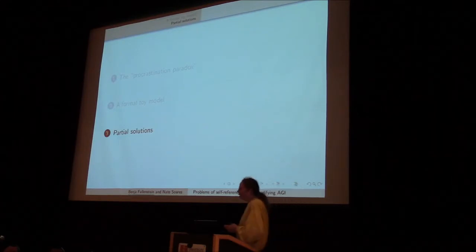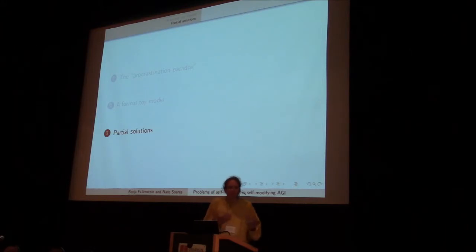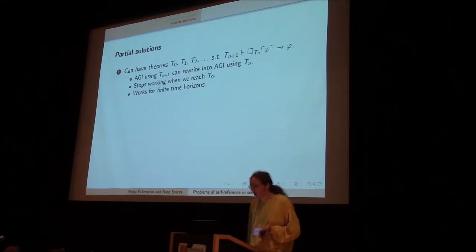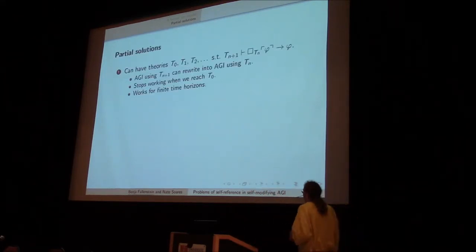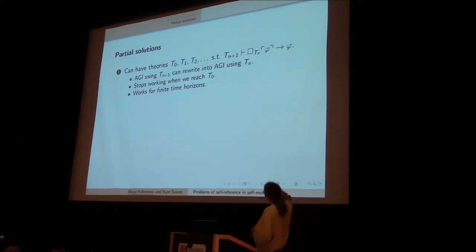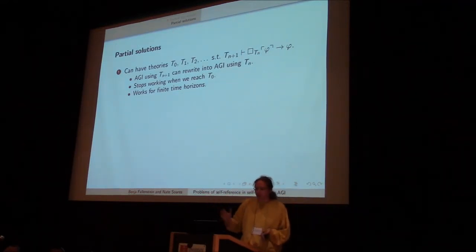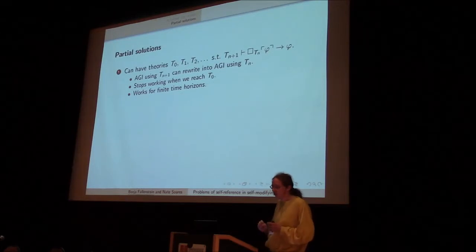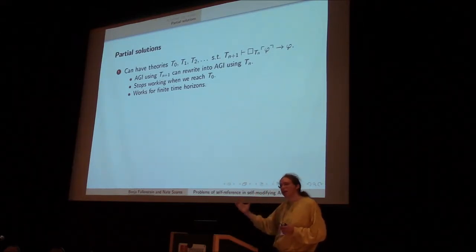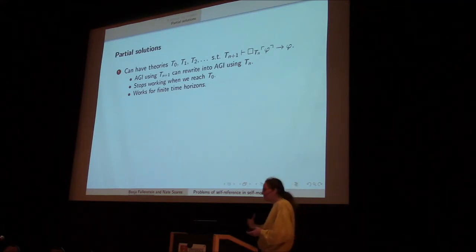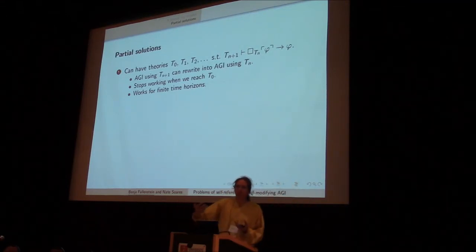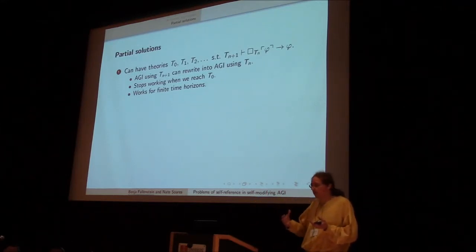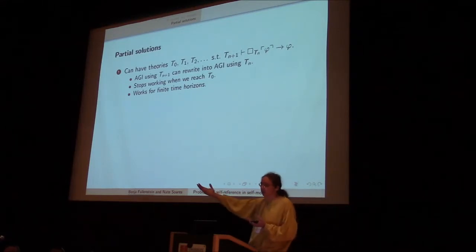We do have some partial solutions to this problem in the context of our toy model. Of course, we need to change our problem slightly, but we have some things that we can do if we change our problem slightly that make things work in the context of this toy model. First of these is, we can have a sequence of theories such that each theory proves this thing about the previous theory. So if we have, if we build an AI using T7, then AI can self-modify into a different version that uses T6, and then it can reason, well, everything that this successor does, it has proven that that thing is safe, and it's proven that in the theory T6. And therefore, since I'm using T7, I know that it's actually a safe thing.